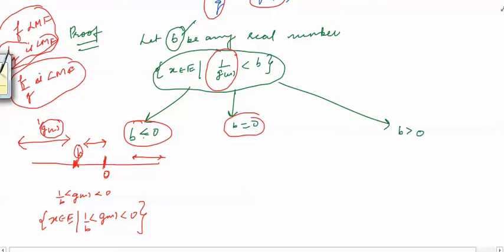When b is equal to 0, we want 1/g(x) to be less than 0, meaning we want 1/g(x) to be negative. This means we want g(x) to be negative. So in this situation the set can be written as { x ∈ E : g(x) < 0 }.